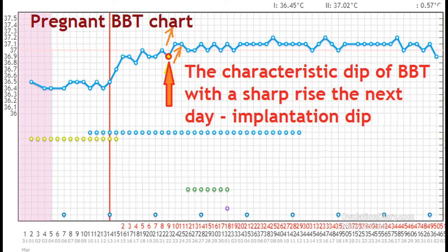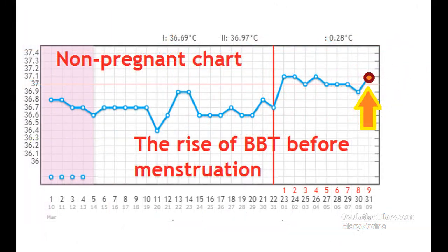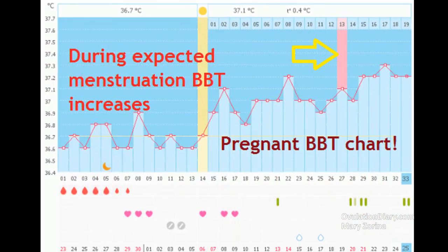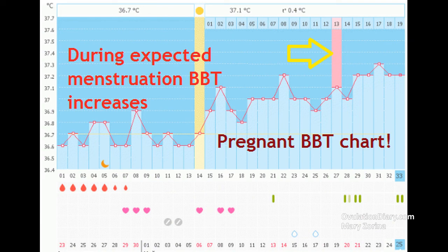It often happens that after the moment of implantation, there is another rise in basal body temperature. On the chart, it looks like a pregnant BBT chart with a second jump in temperature after implantation. However, such an increase does not necessarily occur during normal pregnancy, and if it does happen, it is not a guarantee of pregnancy. Only if BBT stays elevated more than usual in the second phase can there be no doubt of pregnancy.